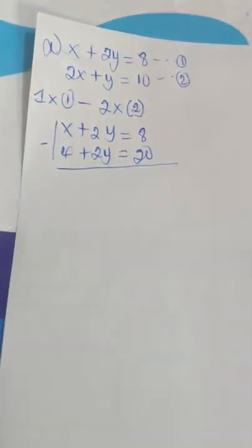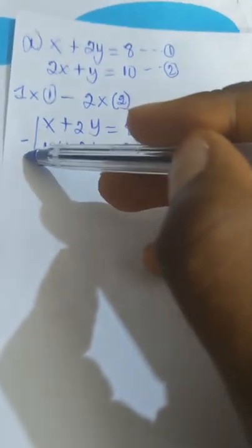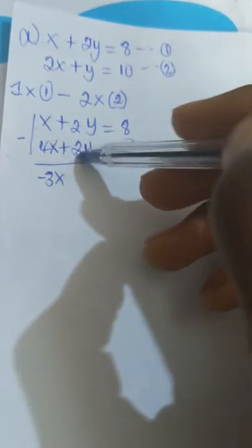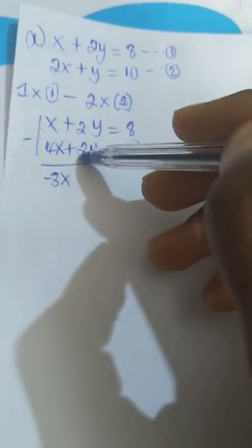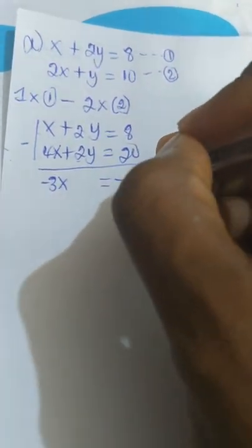So from here we have x minus 4x, which is minus 3x, and 2y minus 2y cancels out, equal to 8 minus 20, which gives minus 12. Divide both sides by minus 3.